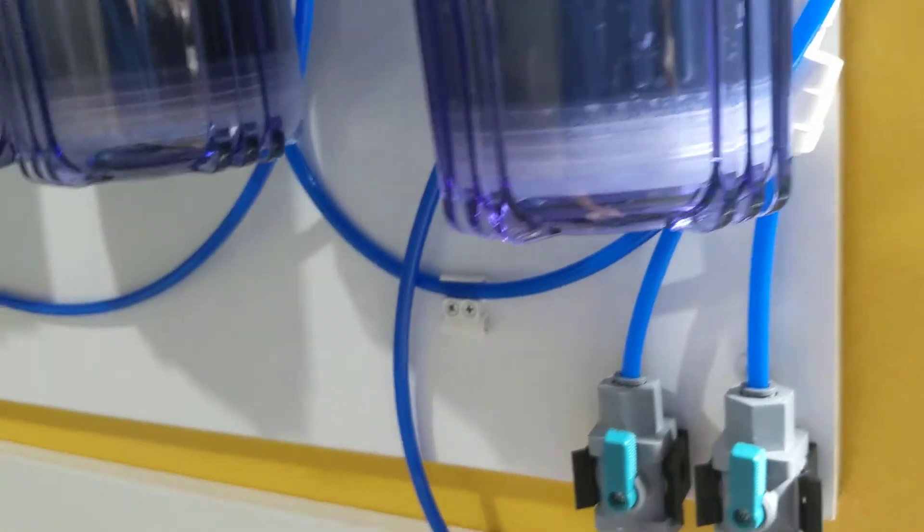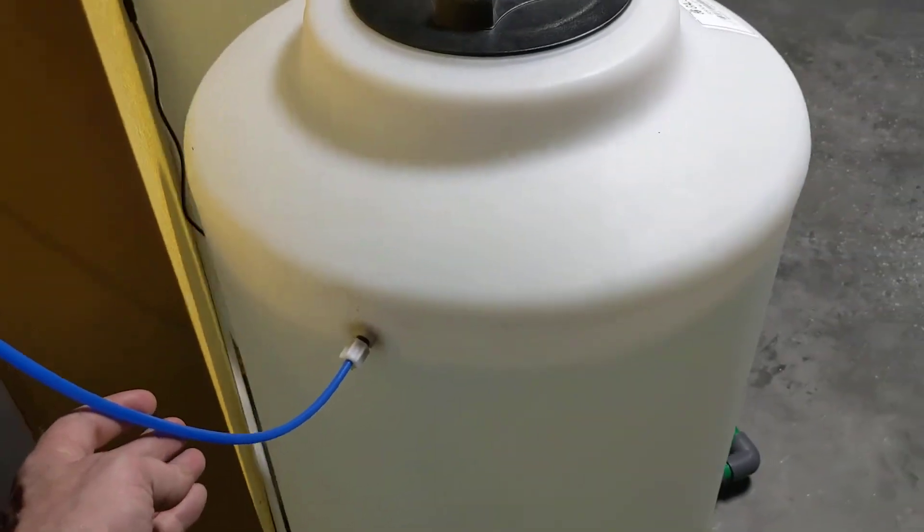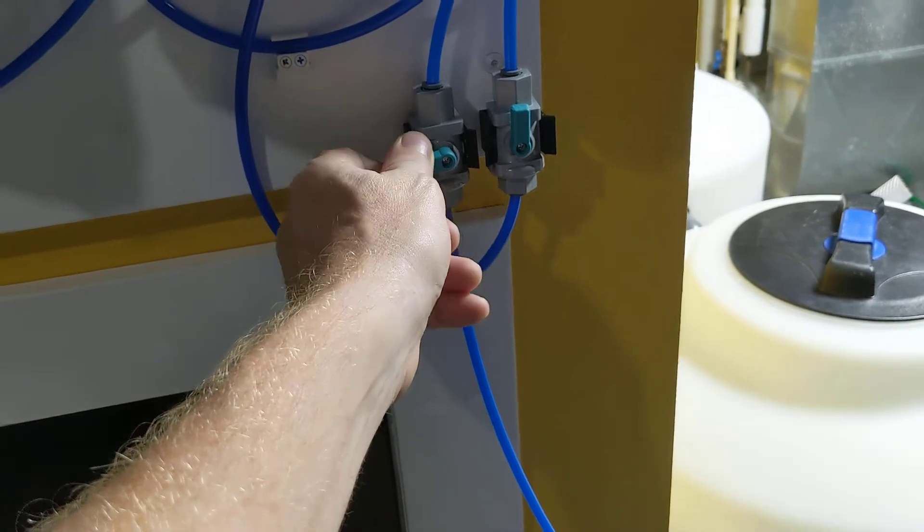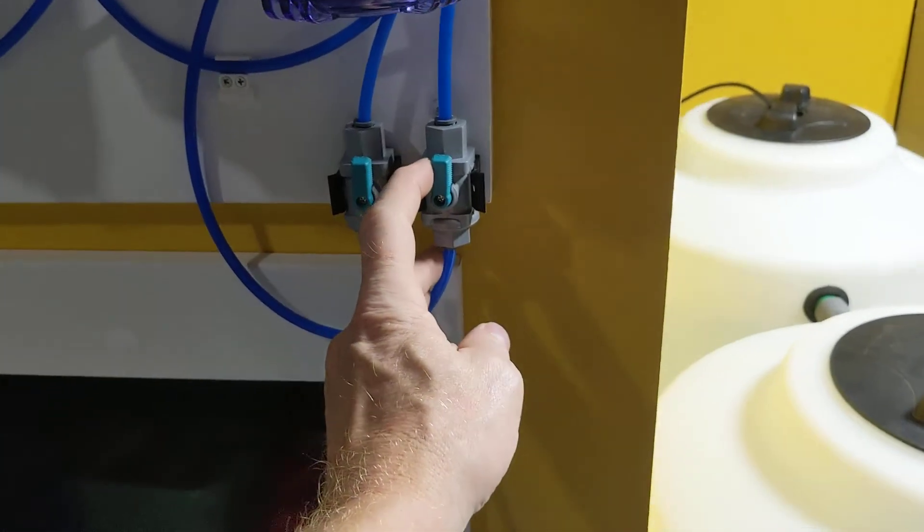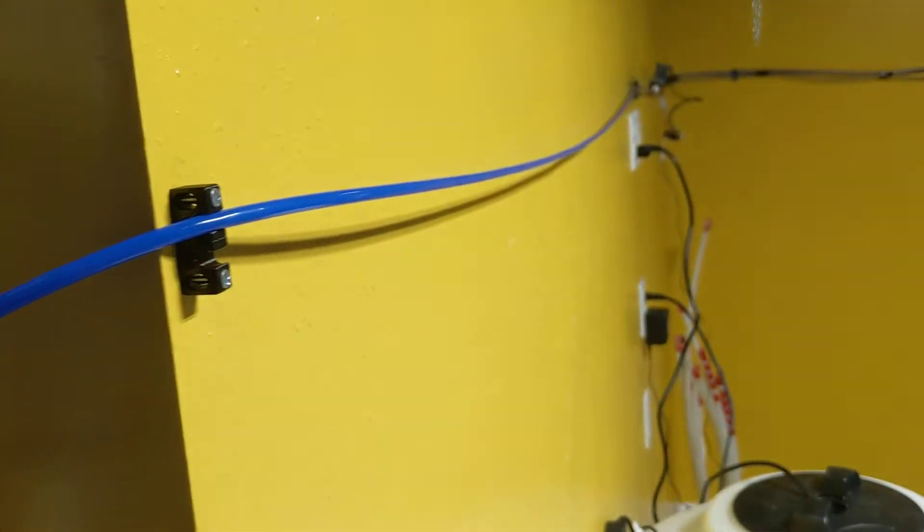And what that does is I have one line going into my RO container. If I need to, I can shut that off and override it if I have to do maintenance. Then I have a second line off the splitter, and that's going to my ATO tank.